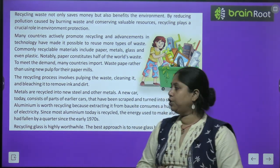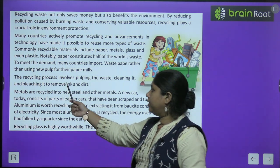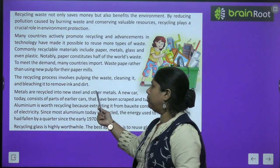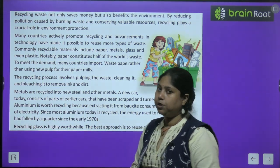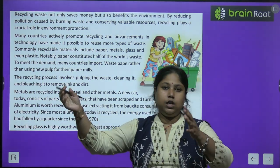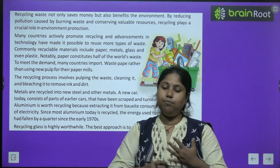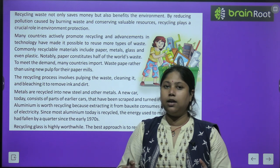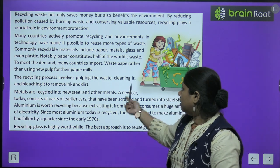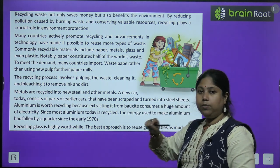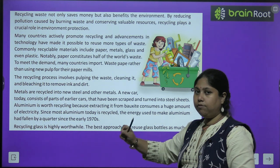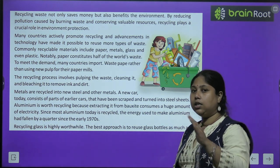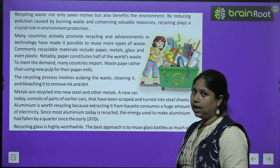The recycling process involves pulping the waste, cleaning it and bleaching it to remove ink and dirt. इस process में सबसे पहले waste paper को मंगवाते हैं, फिर उसका chemicals के साथ मिलाकर pulp जैसा paste तैयार होता है, फिर उसको clean किया जाता है, impurities remove करने के बाद bleaching की जाती है, और ink और dirt निकाल कर clean paper तैयार किया जाता है।